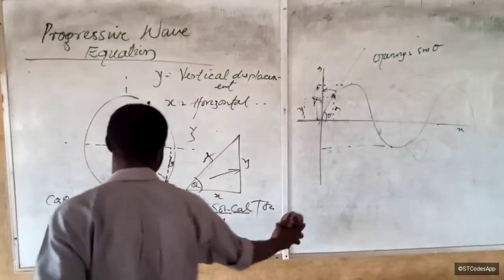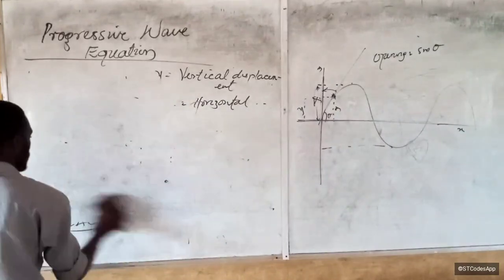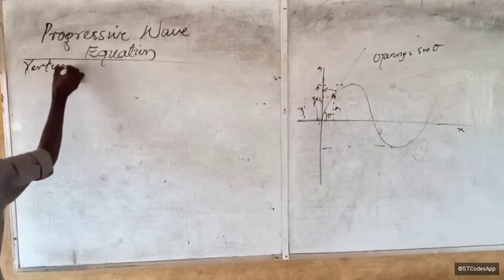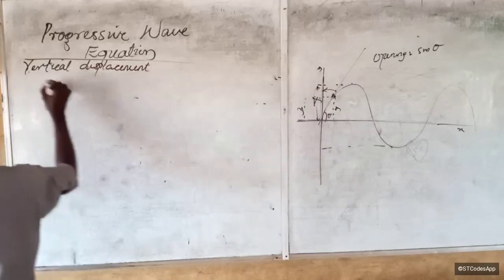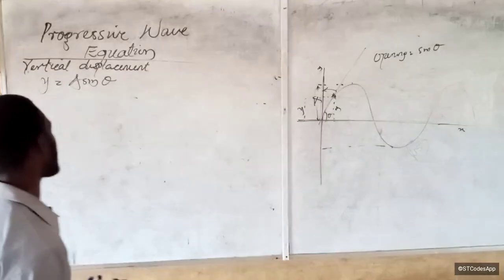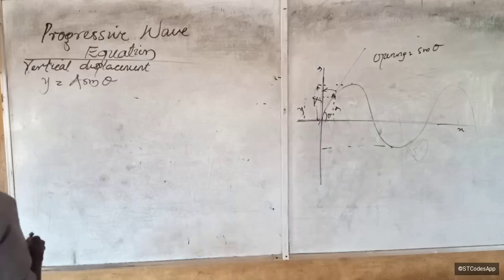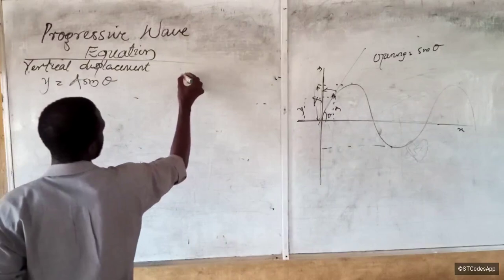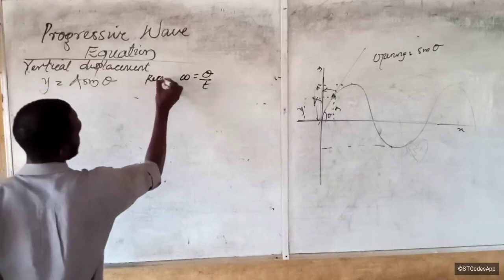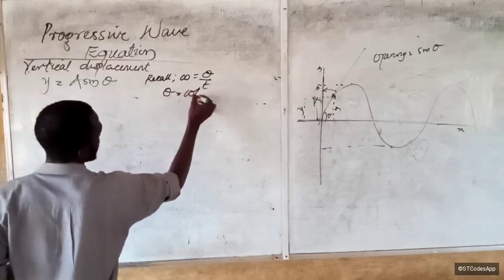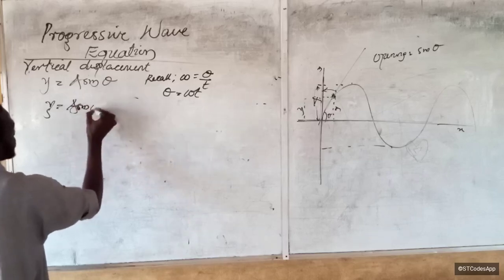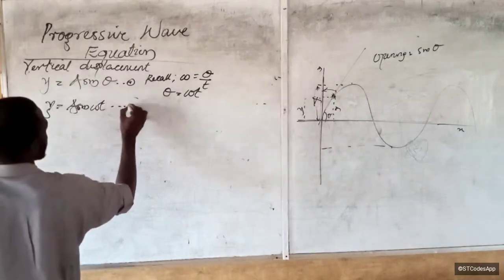Now we recall our knowledge of circular motion. Angular velocity omega equals the angle covered per unit time, so theta equals omega times t. Substituting into equation one, y equals A sine(omega t) — this is equation two.